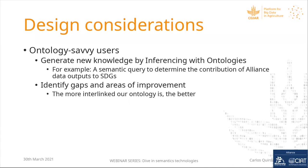The other design consideration addresses ontology savvy users who want to make the best of ontology. For example, ontology people want to generate new knowledge by inferencing with ontologies. We have many ontologies connected to the SDG ontology bridge, and we would like to do a semantic query to determine the contribution of Alliance datasets to SDGs — instead of somebody manually going and saying which datasets contribute to SDG one or SDG two. If you have ontologies connected to the SDGs and to particular datasets, you can do an ontological query to know that.